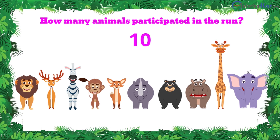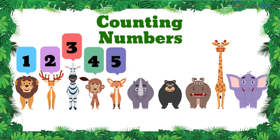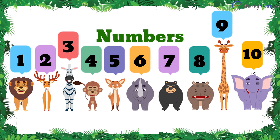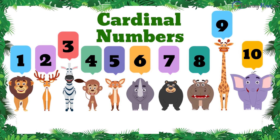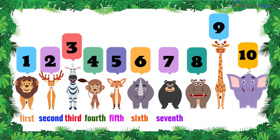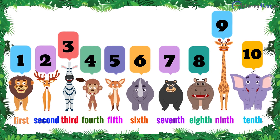While the word ten talks about how many animals participated in the run. The number ten is a counting number. Counting numbers are also called cardinal numbers, and the words first, second, third, fourth, fifth, sixth, seventh, eighth, ninth, and tenth talk about the position of animals in a sequence.